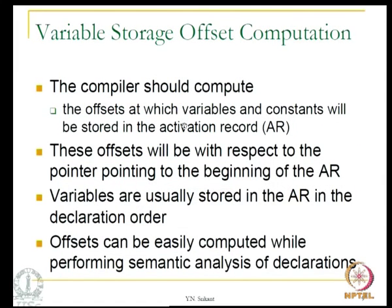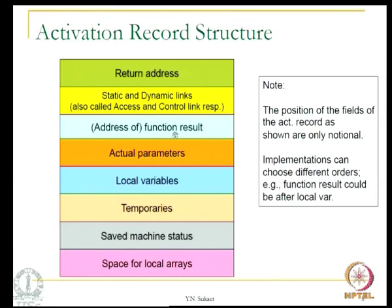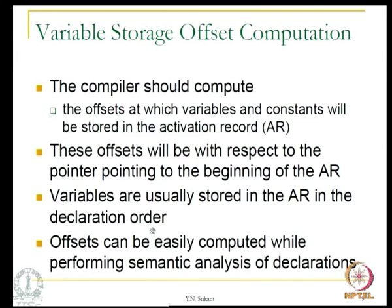There is a bit more on variable storage offset computation. The compiler should compute the offsets at which variables and constants will be stored in the activation record. Here are the local variables, and we should know at which position these variables will be placed on the stack. With respect to the beginning of the activation record — denoted as offset 0 — the offsets of all variables and temporaries will be computed. Variables are usually stored in declaration order and can be computed during semantic analysis.